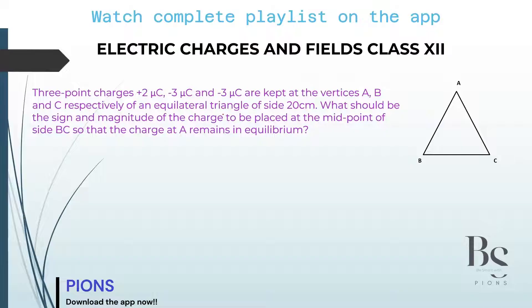Three point charges, 2 microcoulomb, minus 3 microcoulomb and minus 3 microcoulomb are kept at vertices A, B and C. Since they are given in order, we will take it in the same order to avoid any later confusions. So at A, I am putting 2 microcoulomb. At B, you have minus 3 microcoulomb and at C, you have minus 3 microcoulomb. I am following the same order.